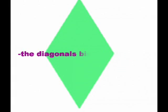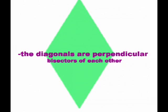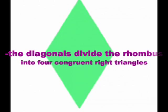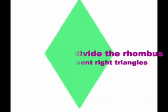The diagonals bisect the angles, the diagonals are perpendicular bisectors of each other, and the diagonals divide the rhombus into four congruent right triangles.